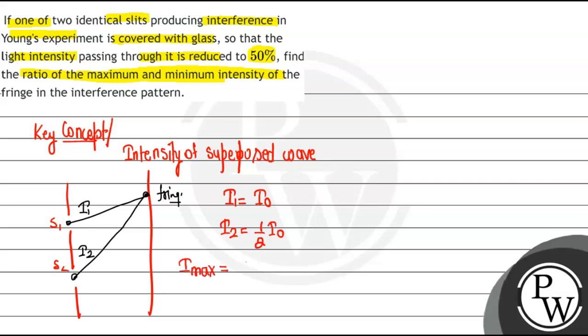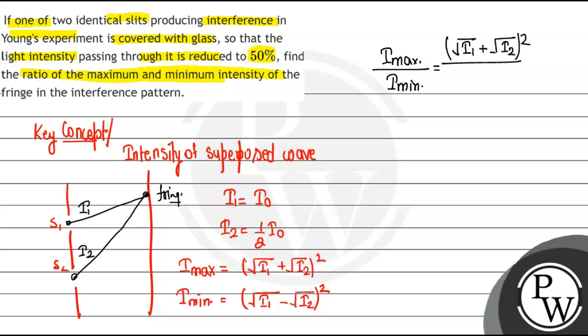For intensity, the formula is that I_max equals (√I1 + √I2)² and I_min equals (√I1 - √I2)². We need the ratio, so we need I_max over I_min, which equals (√I1 + √I2)² divided by (√I1 - √I2)².